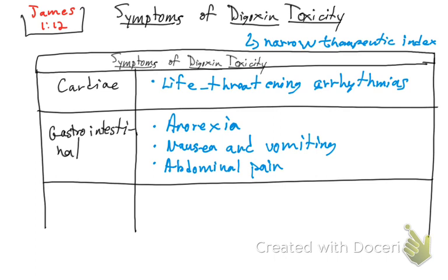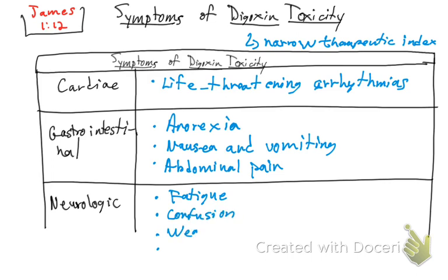In the neurologic system, we're going to see at least four symptoms. The first is fatigue. The patient can also have confusion and weakness. But one more very important symptom — which is a key clue — is color vision alterations.